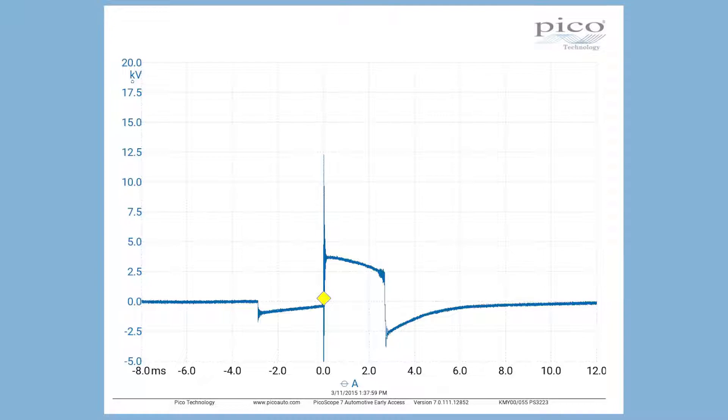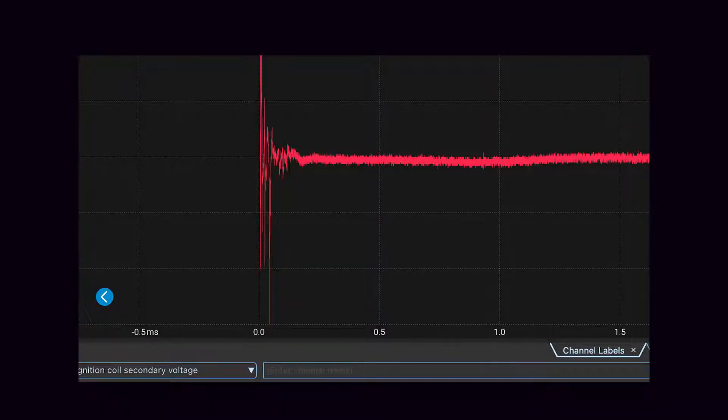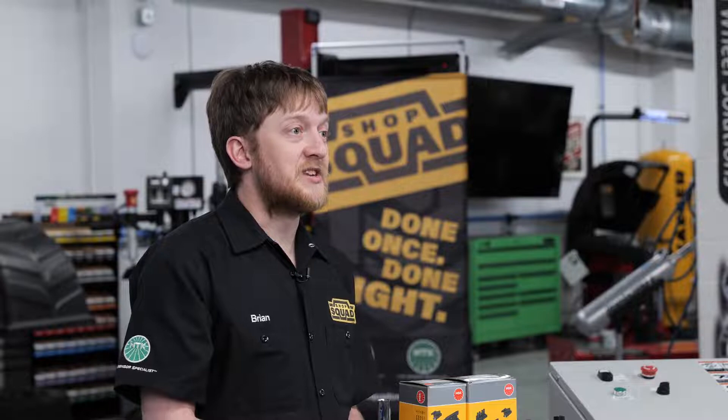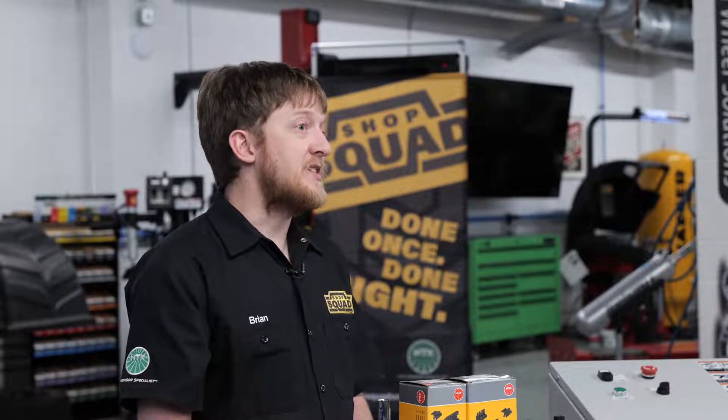One millisecond per division is typically the optimal time base depending on the size of your screen and the type of ignition system. A healthy coil and ignition system generates 3 to 4 kilovolts at idle. As load and engine speed increase, the kV spike will increase.